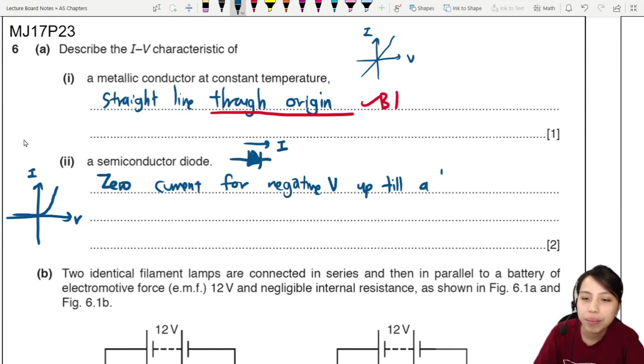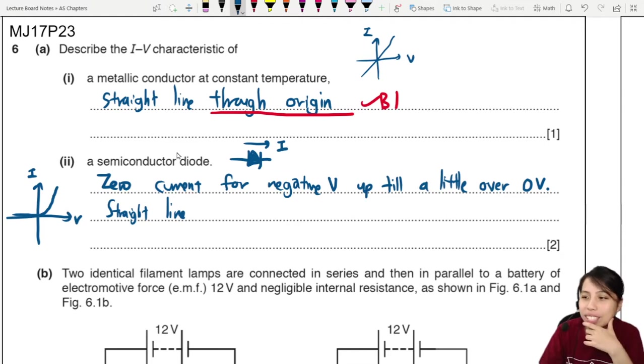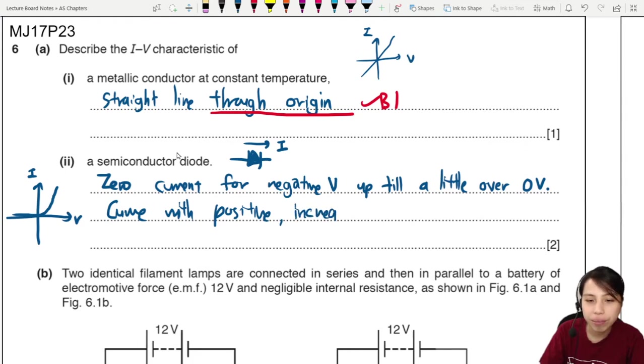So zero current for the part where it's in the negative volts until a little over zero volts. So it's going to be zero current all the way until a little bit over. Then it starts to increase, second part. We talk about the increase. So this one here at first will be a little bit of a line increasing. We don't say straight line, we say a curve with a positive increasing gradient.